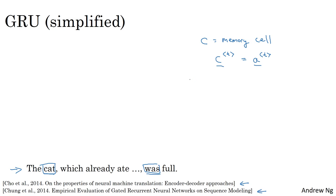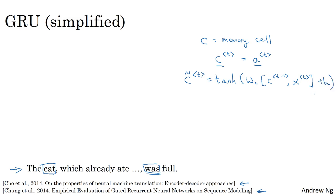These are the equations that govern the computations of a GRU unit. At every time step, we're going to consider overwriting the memory cell with a candidate value, C̃(t). We compute this using: C̃(t) = tanh(W_c [C(t-1), x_t] + b_c). So C̃(t) is a candidate for replacing C(t). The really important idea of the GRU is that we'll have a gate — gamma_u, where gamma is the capital Greek letter and u stands for update gate. This value is between 0 and 1, computed with a sigmoid function.